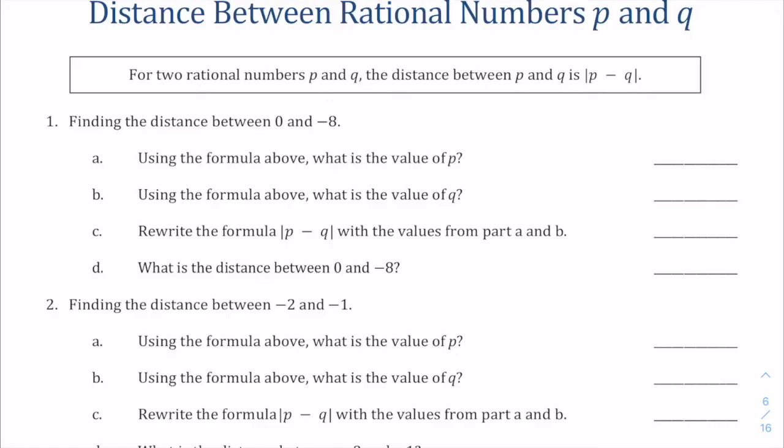Hello everyone, in this lesson we're going to talk about how to find the distance between rational numbers p and q. We're going to use a specific formula here to find the distance between these digits. That formula is the absolute value of p minus q.